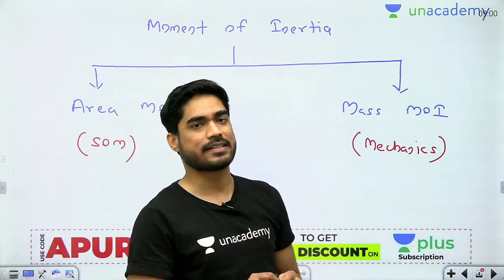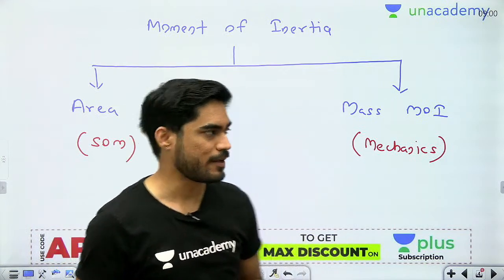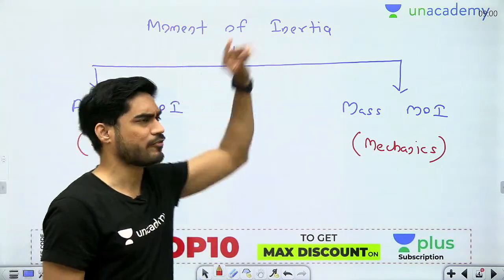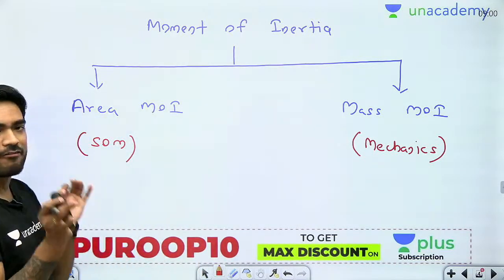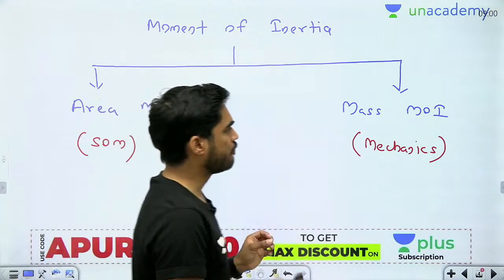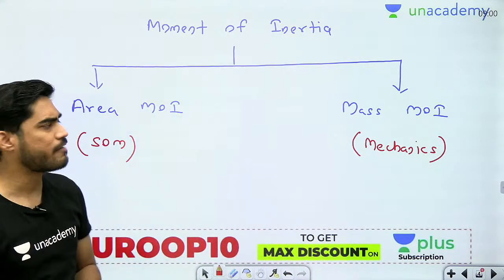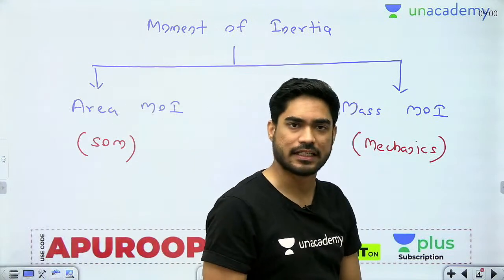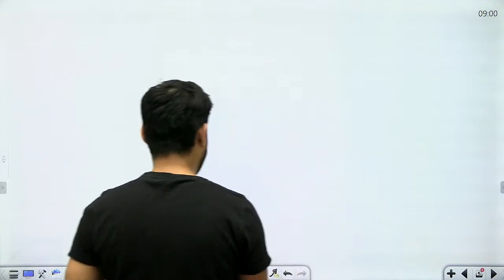If you want to understand those, you can quickly go to those videos and watch them. Now, radius of gyration is related to moment of inertia, so we will have one radius of gyration related to area moment of inertia and one related to mass moment of inertia. We will talk about both.